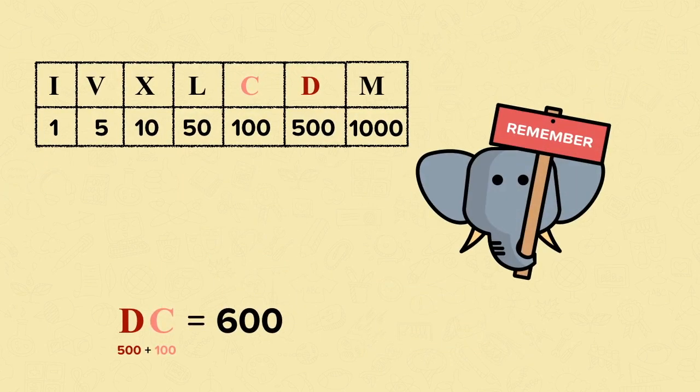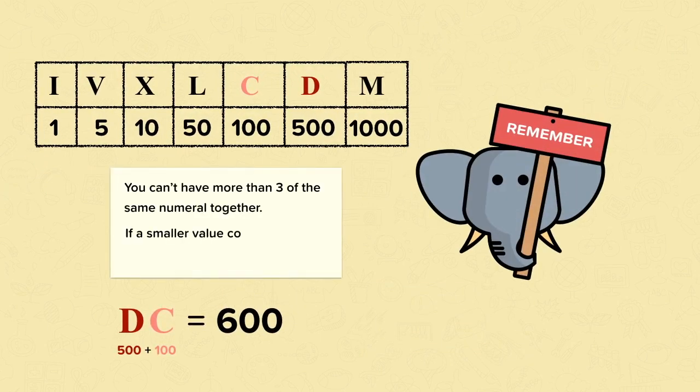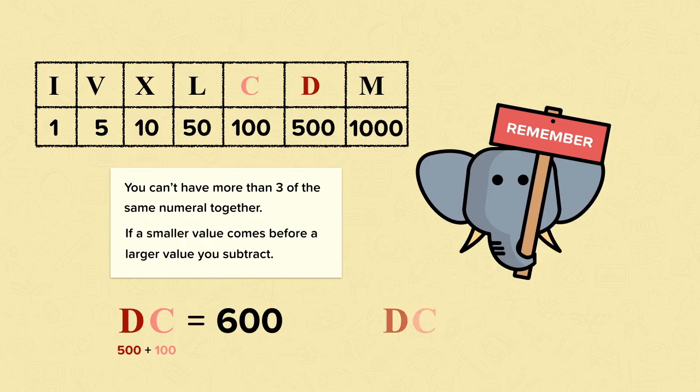So with Roman numerals, the two key rules to remember are: you can't have more than three of the same numerals together, and if a smaller value comes before a larger value, then you need to subtract.